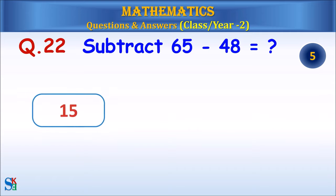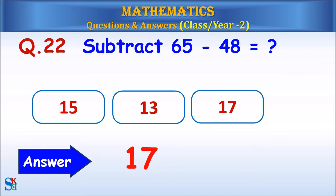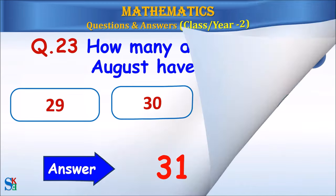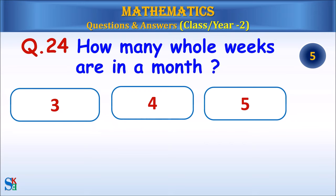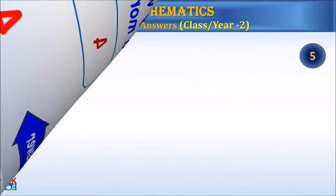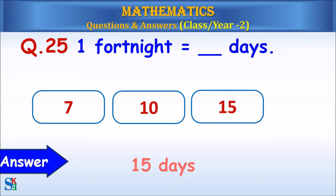Question 22: Subtract 48 from 65. What do you get? Answer: 17. Question 23: How many days does August have? Answer: 31. Question 24: How many whole weeks are there in a month? Answer: 4. Question 25: One fortnight equals how many days? Answer: 15 days.